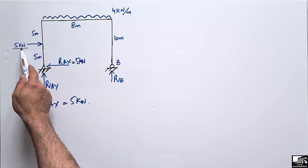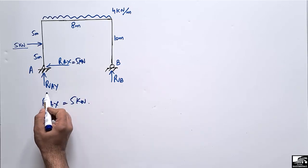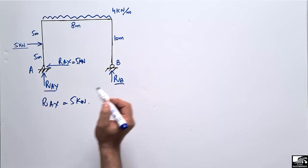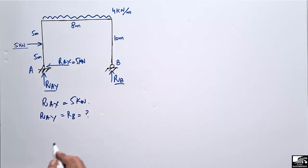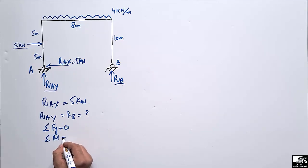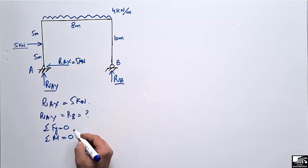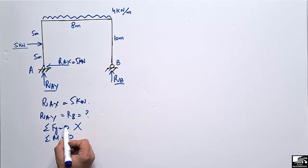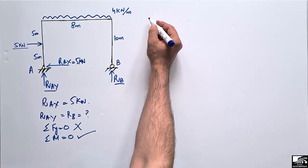The whole 5 kN horizontal load is taken by support A, so RAx = 5 kN. To find RAy and RB, we have two unknowns, so we cannot use the summation of vertical forces directly. We must use the summation of moments at a point equal to zero. We will take moments about point A to find RB first.